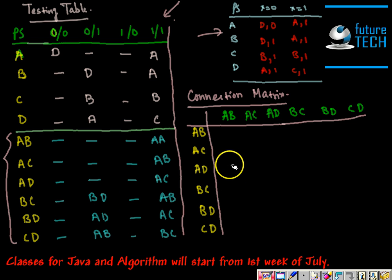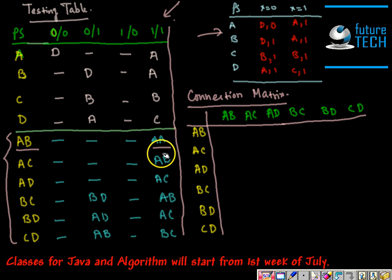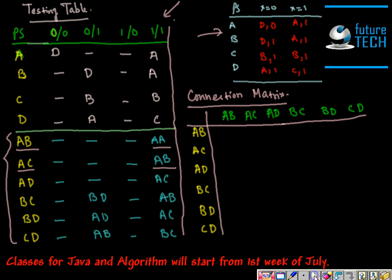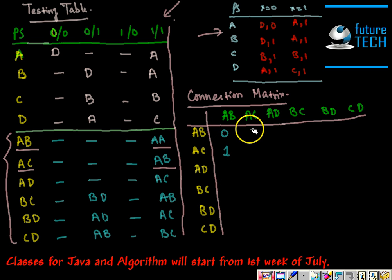AB is the uncertainty pair and AA is the implied pair. If the same state appears twice, we are going to leave it and not take that one. AC is the uncertainty pair and AB is the implied pair, so the cell AC to AB is going to contain one. AB to AB and AB to AC are zero because AB doesn't have any implied pairs. AD to AC is there, so that cell is going to be one, and the rest are zero.